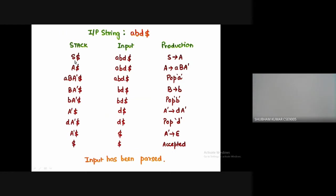Referencing the parse table, we need to see which production is associated with the first element of the stack and the input. Here, S and small a gives us the production S determines capital A. Since A is a non-terminal, we need to replace S, which gives us dollar.